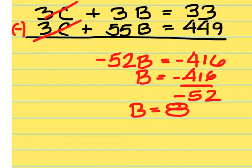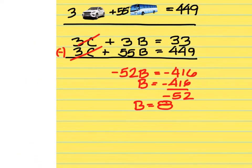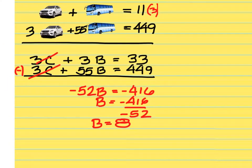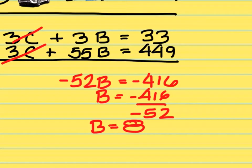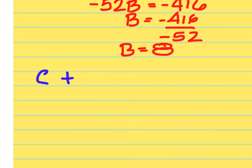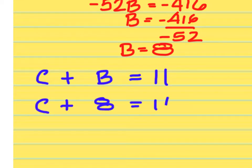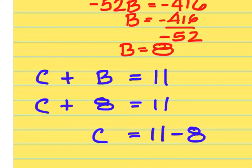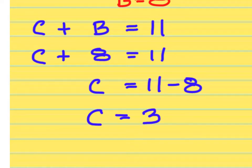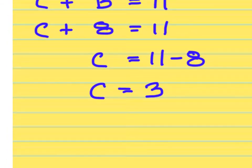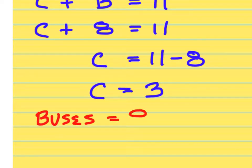What do we have to find next? The number of cars. What can we do with B equals 8 to find the number of cars? Plug it into one of the first two equations — the top one is easiest. C plus B equals 11. We're putting in 8 in place of B, and moving the 8 over gives an answer of 3. So for the number of buses we have 8, and for the number of cars we have 3.